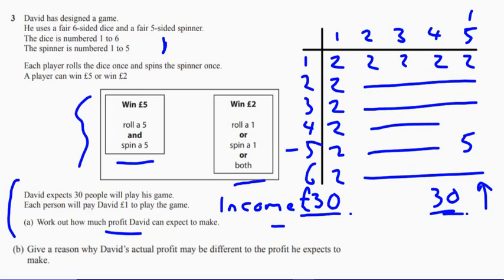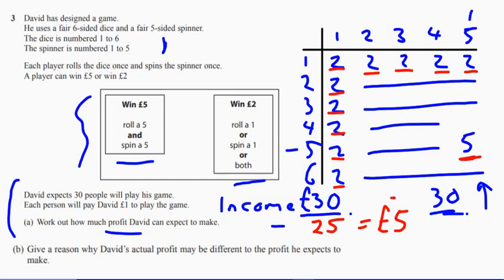If we just add up five, and we've got two, four, six, eight, ten, twelve, fourteen, sixteen, eighteen, twenty, twenty-five. So we take away the 25. So we can expect that if we play the game 30 times, we're going to expect he's going to make five pound profit.